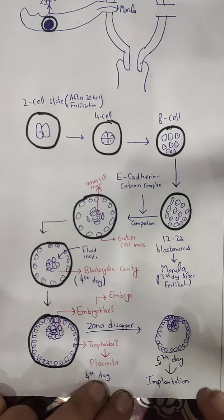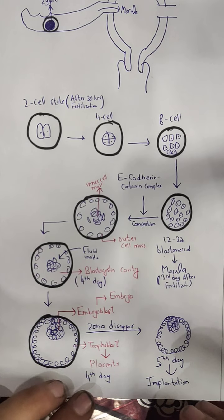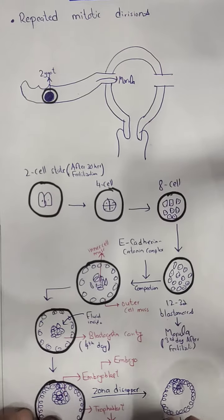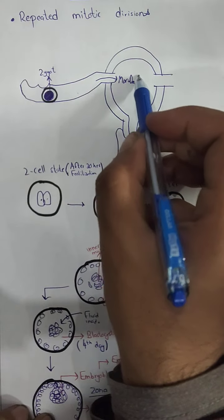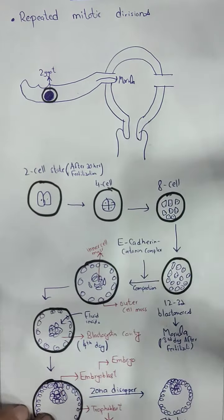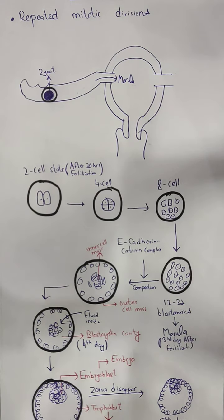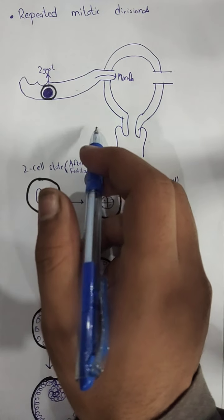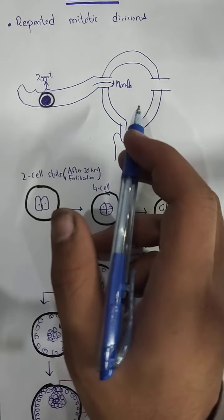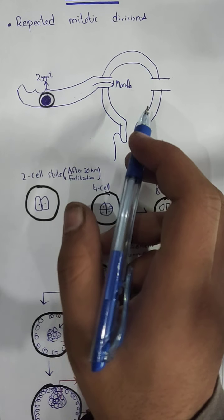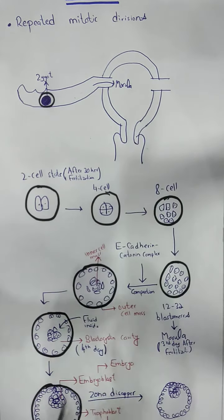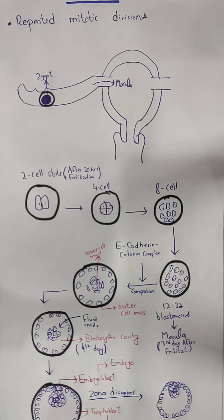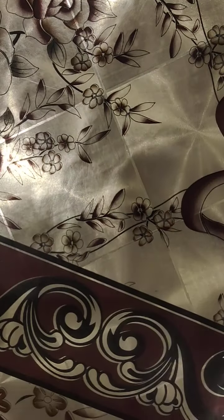After the zona pellucida disappears, implantation will occur. Implantation will be in the superior and posterior wall of the uterus. We will discuss further implantation in the second week, including what complications can happen.